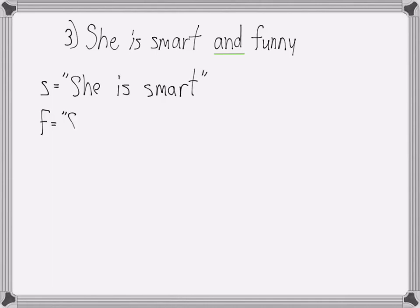'She is smart and funny' gives us the variables s for 'she is smart' and f for 'she is funny', which we can then write as s and f, which we say s and f.